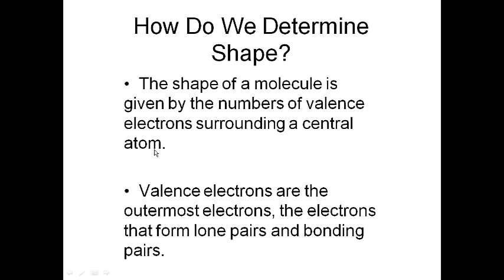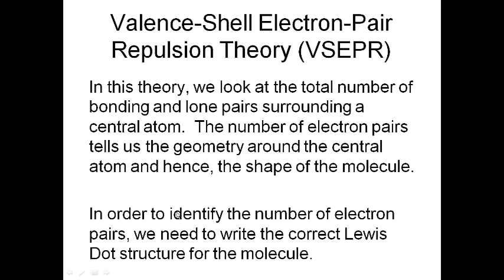So how do we determine shapes? First we need a valid Lewis dot structure, then we need a central atom. Once we have that central atom, we look at the number of valence electrons surrounding it — the outermost electrons that are in the lone pairs and the bonding pairs. The theory we use to predict molecular geometry is called valence-shell electron pair repulsion theory, or VSEPR theory. We take our Lewis dot structure and convert it into a three-dimensional geometry by determining the number of lone pairs and bonding pairs, and then fit them into one of a number of geometries.